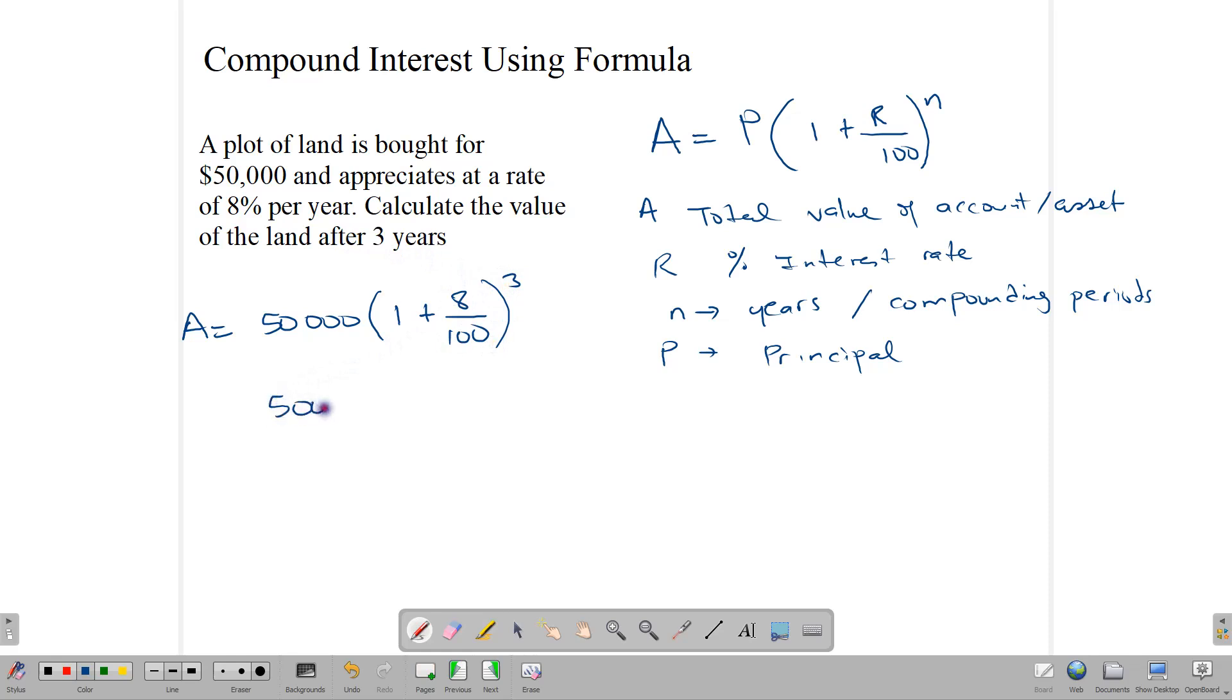And so what we have here is $50,000 times 1.08. Put this in decimal. 8 divided by 100 is 0.08. 8 plus 1 gives you 1.08 to the third. And all that you need to do now is just punch this in your calculator and you're finished. And once you punch this into your calculator, you will get $62,985.60.